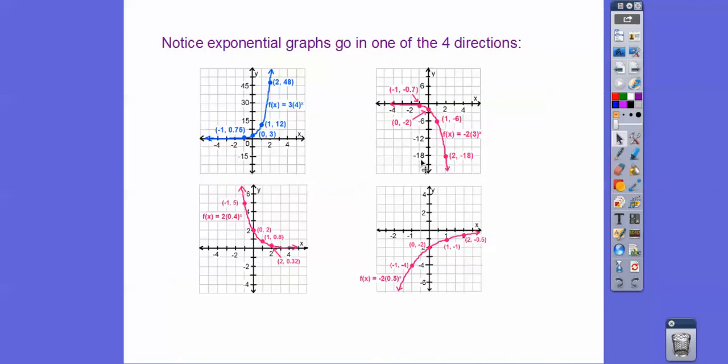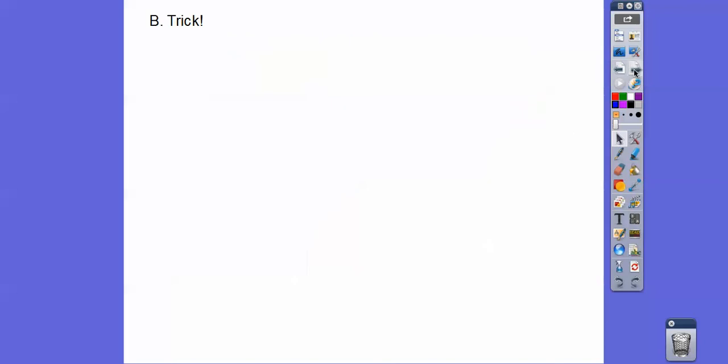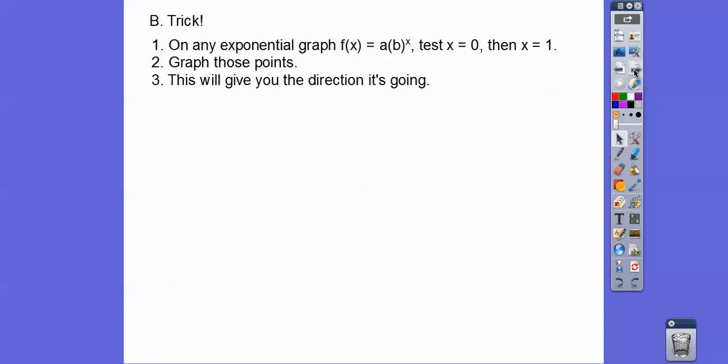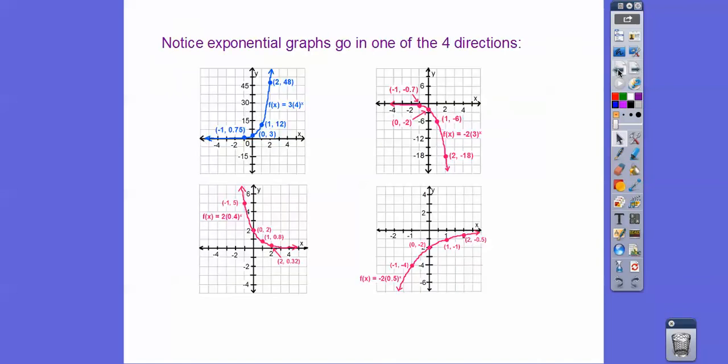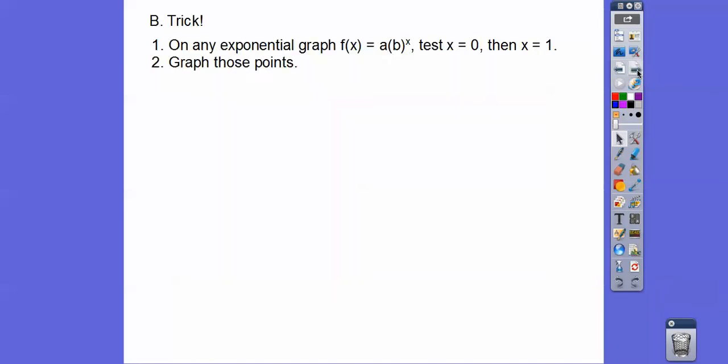Exponential graphs look like one of these four graphs. It goes up like that, or it goes down like that. The shortcut trick is on any exponential function, test x equals 0, and then x equals 1. Graph those points, and this will give you the direction that graph is going. It's going to go in one of these directions. Exponential graphs, they call them j curves, because this looks like a j. This is a backwards j. This is an upside down j, and this one's an upside down backwards j. Exponential graphs always make those kind of graphs.